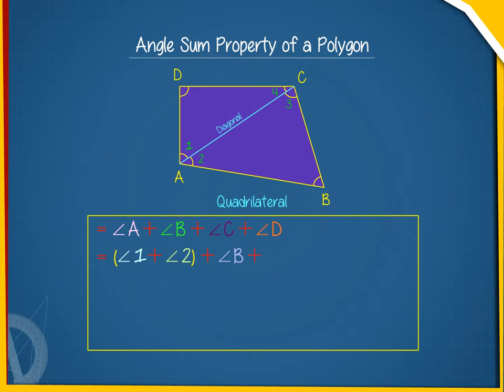This equals angle 1 plus angle 4 plus angle D plus angle 2 plus angle B plus angle 3, which equals 180 degrees plus 180 degrees, which equals 360 degrees.